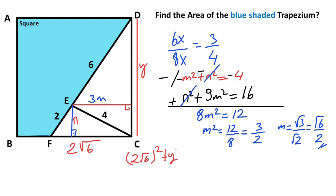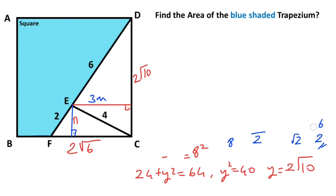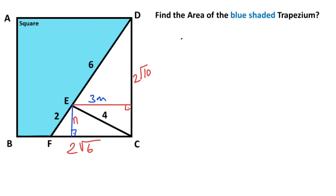Writing 2x here, we are going from 8 to 4. That means y squared equals 40, so y is going to be 2 root 10. Let's write 2 root 10 here. Therefore the trapezium area formula uses this length, which is 2 root 2 minus 2 root 6, and the height, which is 2 root 10.